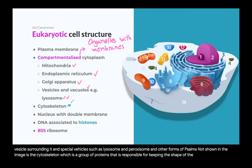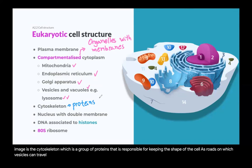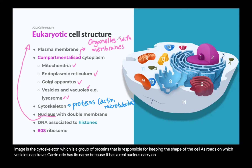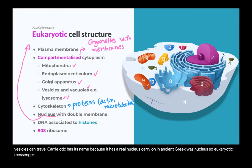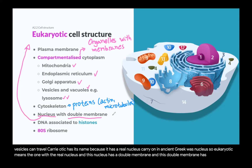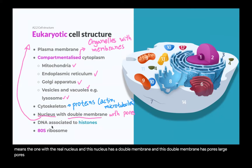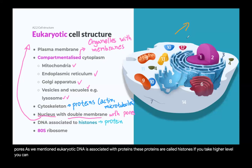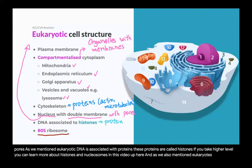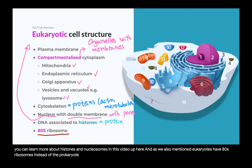Not shown in the image is the cytoskeleton — a group of proteins responsible for keeping the shape of the cell and also serving as roads on which vesicles travel. Eukaryotic has its name because it has a real nucleus: 'karyon' in ancient Greek meant nucleus, so eukaryotic means 'the one with the real nucleus.' This nucleus has a double membrane with large pores. Eukaryotic DNA is associated with proteins called histones, and eukaryotes have 80S ribosomes instead of the prokaryotic 70S ribosomes.